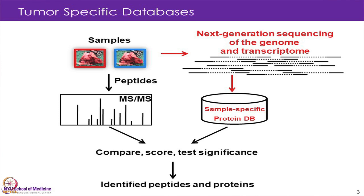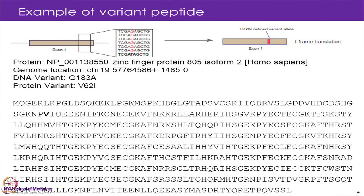Just to look at a few examples — if we have a single nucleotide change, like in this case here, we have one base that is changing, which can then lead to a change in an amino acid.